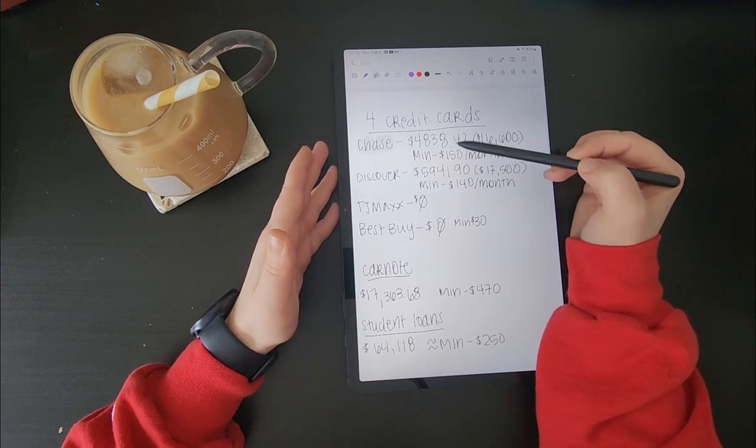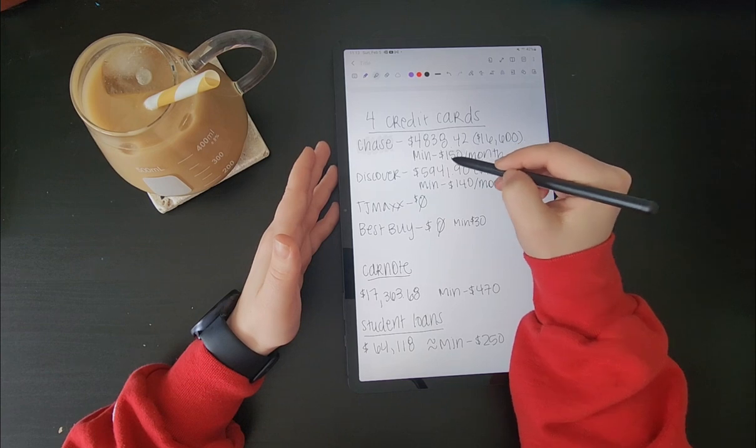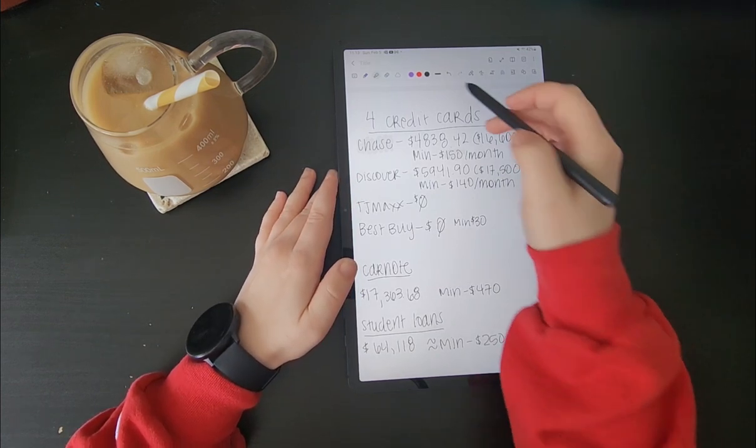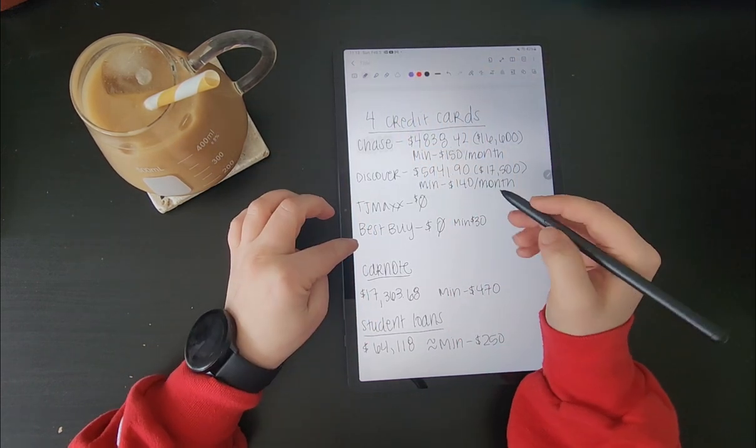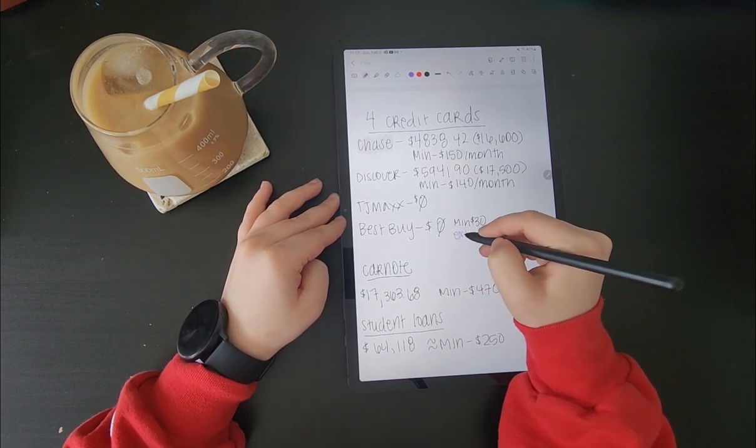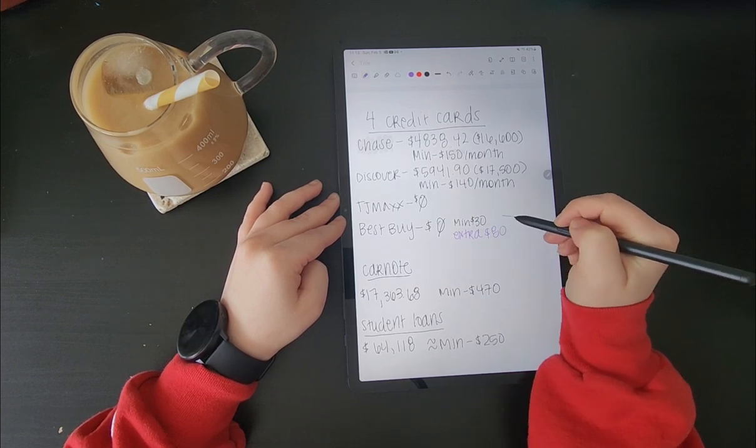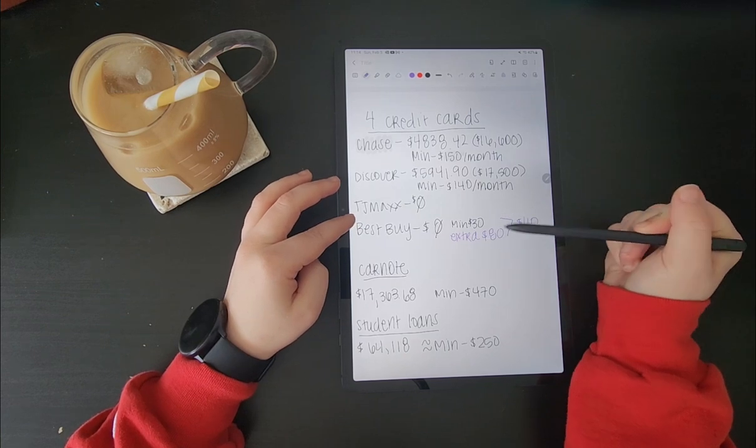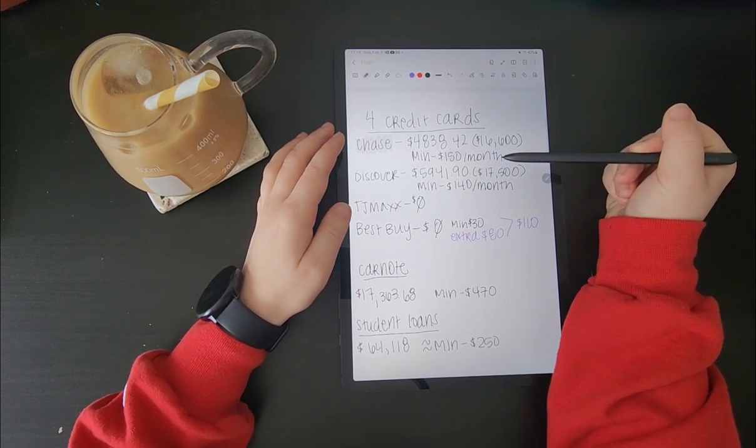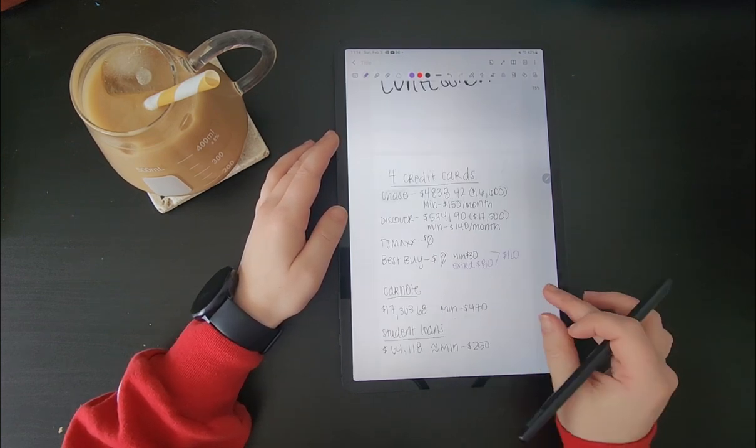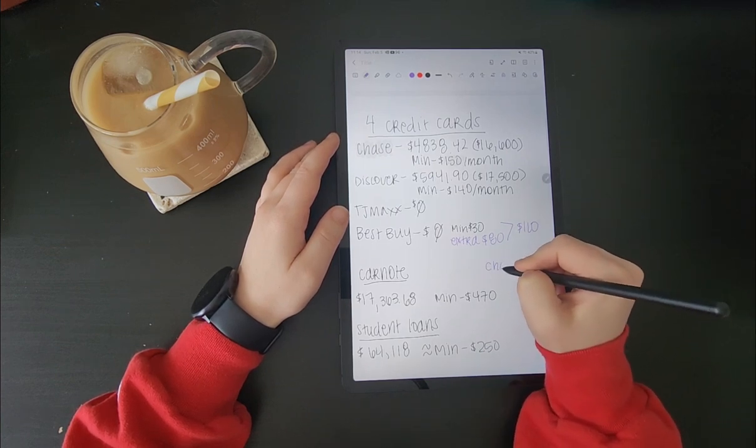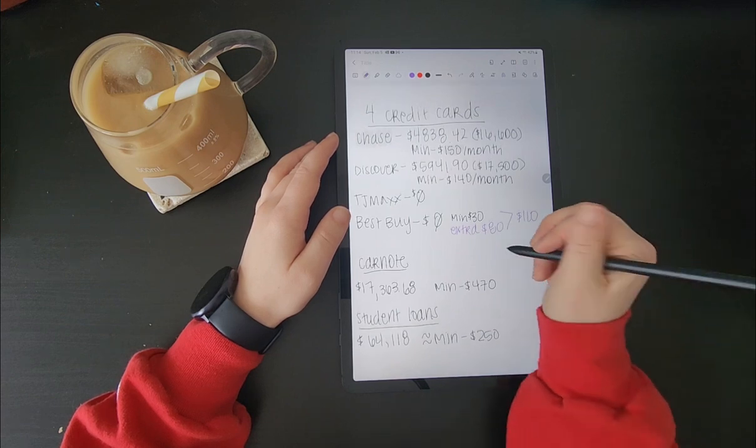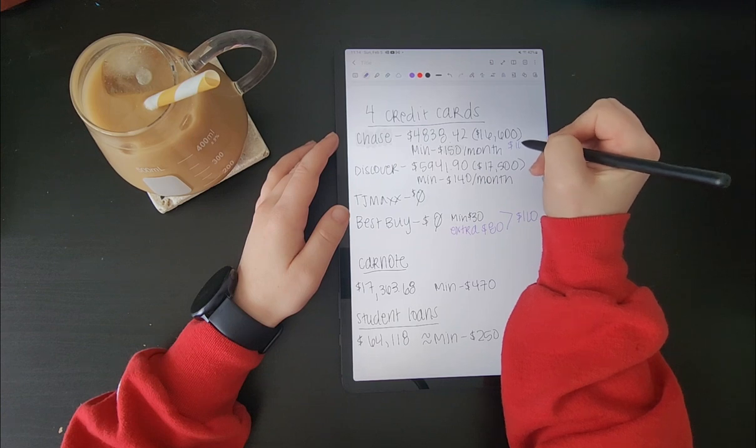And I'm going to be making the minimum payment on this every month. So I'll make $150 payment to it every month. And then I'm going to add on the extra. So when I was paying my Best Buy credit card, I was doing a minimum of $30 because that was the minimum and an extra of $80. So that's $110. So now that I paid this one off, I'm going to be taking the total amount that I paid on this one and adding it into an extra payment on my Chase credit card every month. So Chase is going to be getting an extra $110 every month.